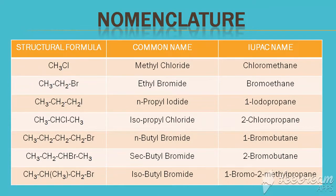Now further, this is the nomenclature. There are two types of nomenclature. One is the common name as alkyl halide, where the alkyl group is written first followed by the halogen, and the other is the IUPAC name.